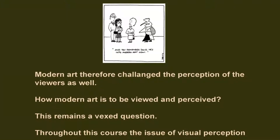In that sense, modern art not only challenges past art and tradition but challenges the perception of viewers as well. The question is no longer just 'what is modern art?' or 'how do we define it?' — the question can also be asked as 'how is modern art to be viewed and perceived?' Throughout this course, as we keep exploring changes in modern western art, we shall repeatedly come back to the problem of visual perception. At the end of the day, modern art is a big challenge to our visual perception, and we need to change that as well.